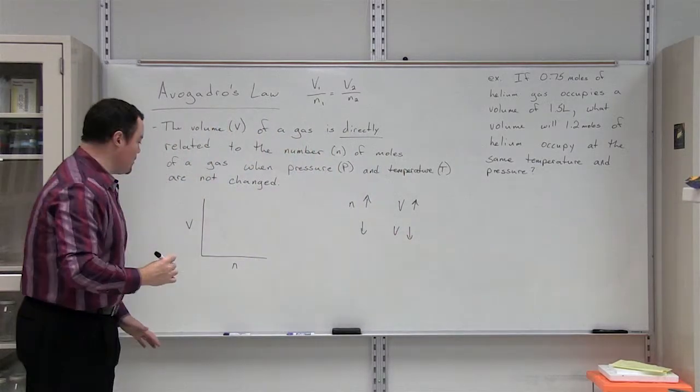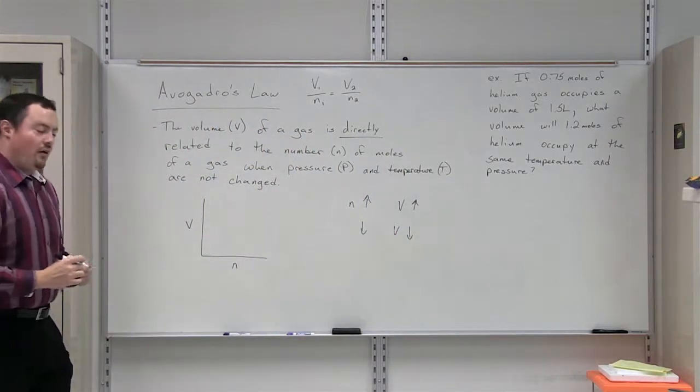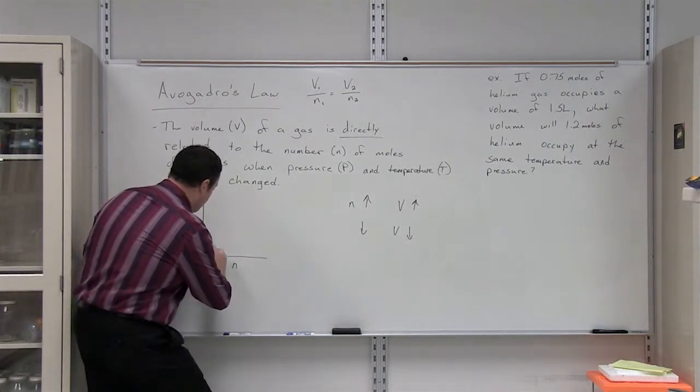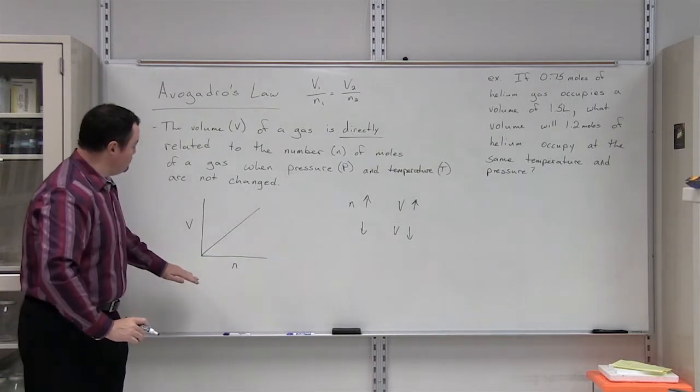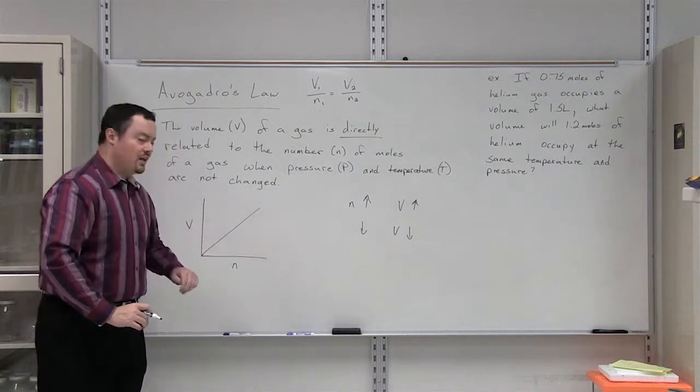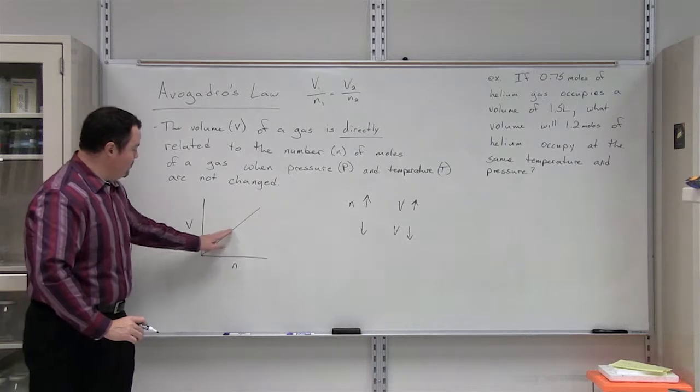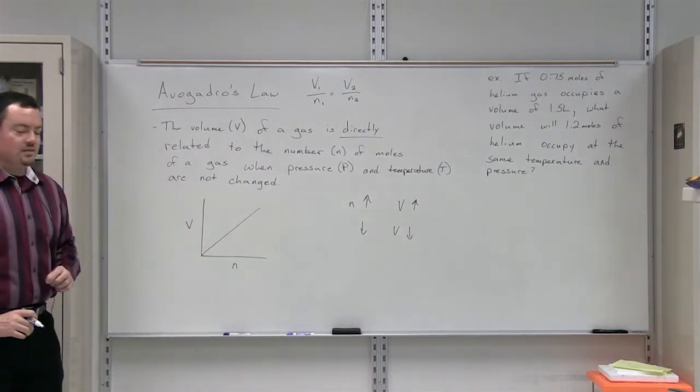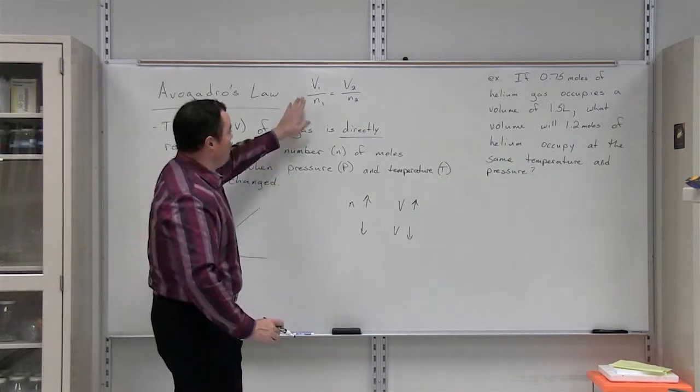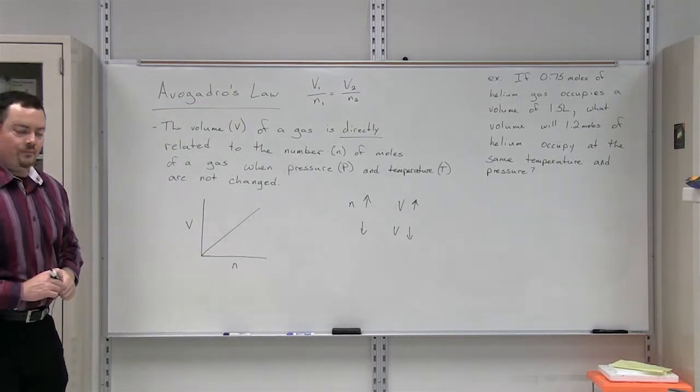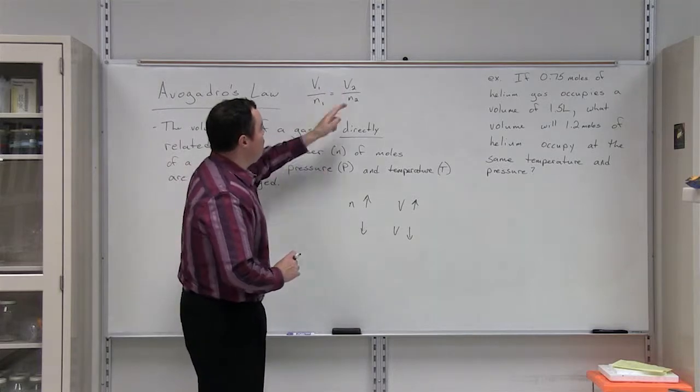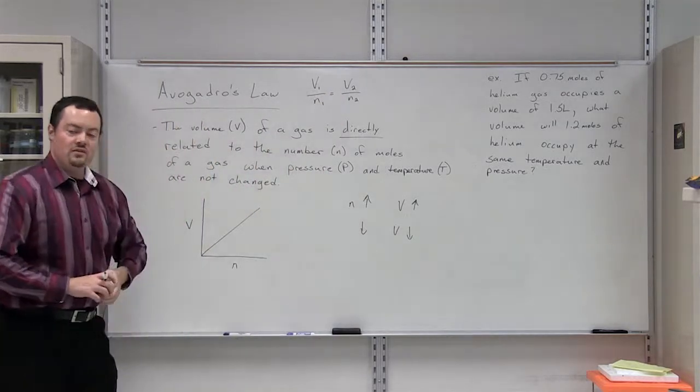This can be shown graphically, graphing volume and number of moles like this. If our number of moles increase, our volume should also increase. The formula for Avogadro's Law is stated V1 over N1, N being number of moles, is equal to V2 over N2.